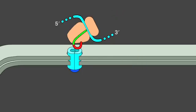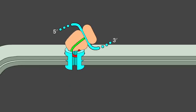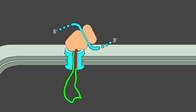In addition to directing proteins to the ER, the signal sequence functions to open the translocation channel. The signal peptide remains bound to the channel, while the rest of the protein chain is threaded through the membrane as a large loop.